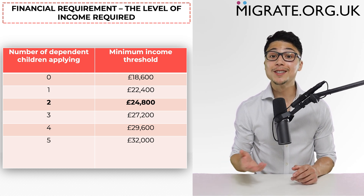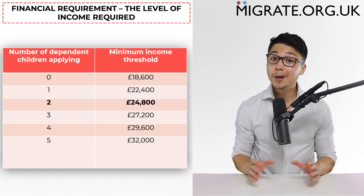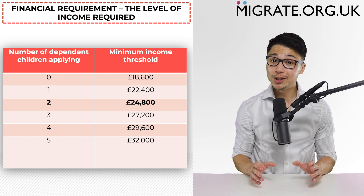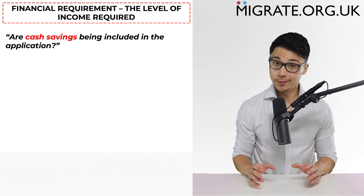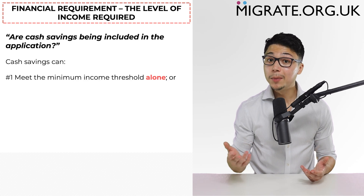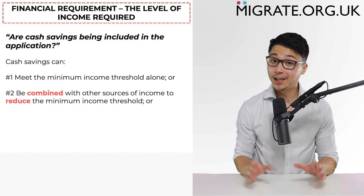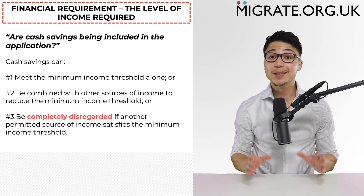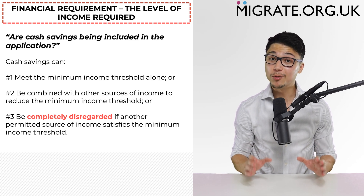It is also worth noting that if you apply with dependent children, you must also satisfy separate requirements in relation to their application — we discuss these in a separate YouTube video. When determining the amount of income you need, you may also consider whether cash savings are being included. Cash savings can: one, meet the minimum income threshold alone; two, be combined with other sources of income to meet the threshold; or three, be completely disregarded if another permitted source of income satisfies the threshold alone.